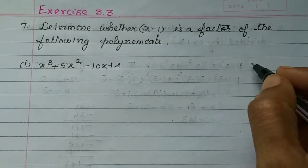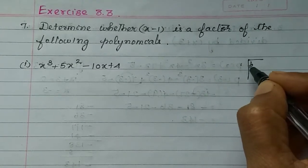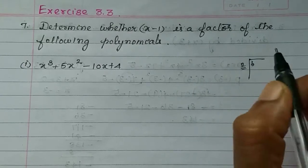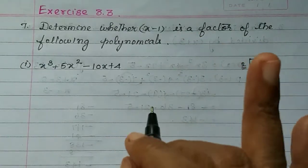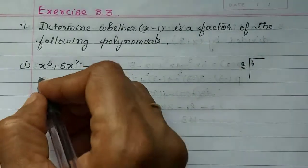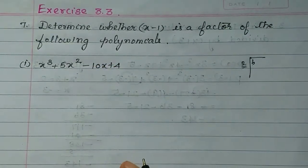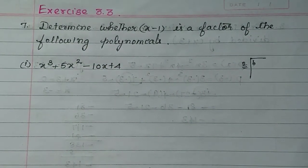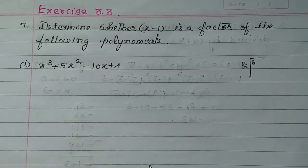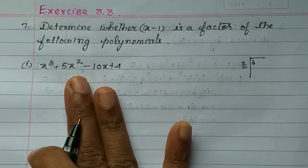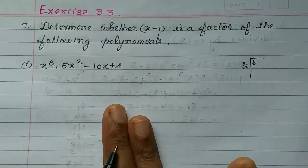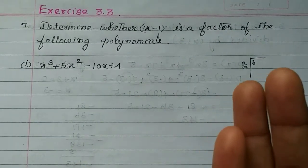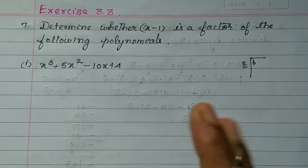So, as usual, the factor theorem: the factor is a remainder. We can substitute the x value. If the remainder is 0, it is a factor. If the remainder is not 0, it is not a factor. Simple.